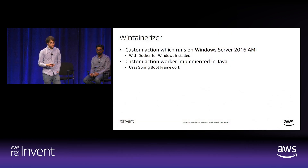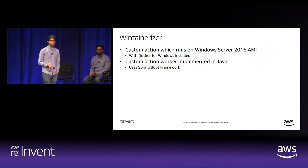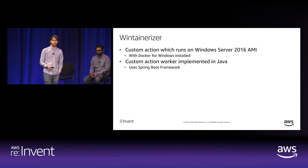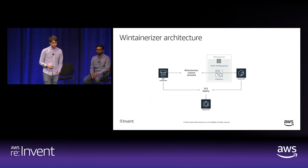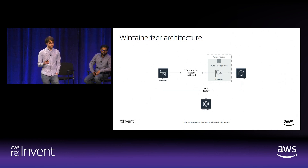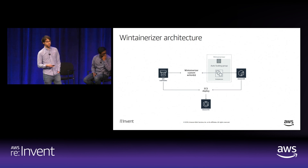We call our custom action the WinTainerizer. It's a custom action running on a Windows Server 2016 AMI that has Docker for Windows installed, so it can build and run Windows Docker containers. The custom action worker code is implemented in Java using the Spring Boot framework. It runs on Amazon EC2 instances in an autoscaling group, frequently looking for new images to build.